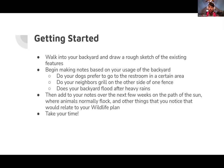Note things like: Do your dogs prefer to run in a certain area or along the fence? Maybe your garden shouldn't be along the outside of the fence. Do your neighbors grill on the other side of the fence? Smell and noise can affect where birds want to nest. Does your backyard flood after heavy rain? Certain areas will puddle up and you want to avoid those. You're trying to find the ideal area to build your garden by eliminating spots where it won't work.